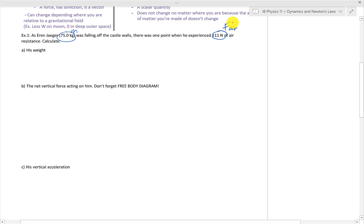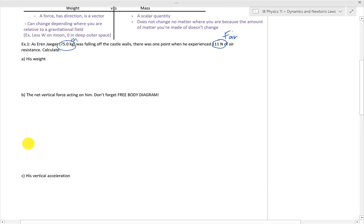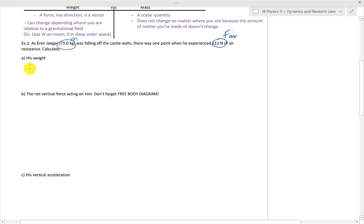We need to calculate his weight. So we learn a new term. The weight is the force due to gravity. It's a vector, and to find that, we need to multiply the mass by acceleration due to gravity.